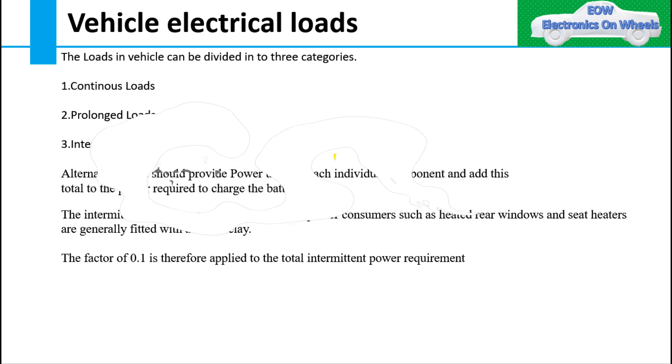First we will see how loads are divided in a vehicle. Loads in a vehicle are divided into three categories. First is continuous loads, second one prolonged loads, last and third one is intermittent loads.